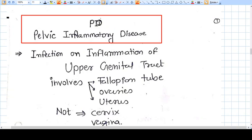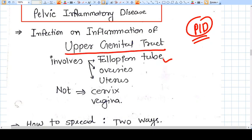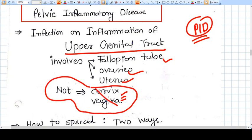Hello everyone, in this video we will discuss briefly pelvic inflammatory disease. When we say PID, that simply means inflammation of the upper genital tract that involves the fallopian tube, ovaries, and uterus—not the cervix and vagina. Pay attention here: cervix and vagina are not included in PID.